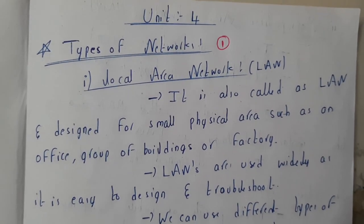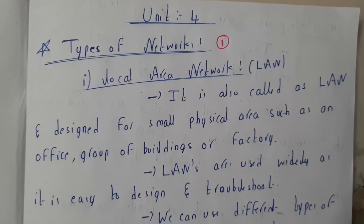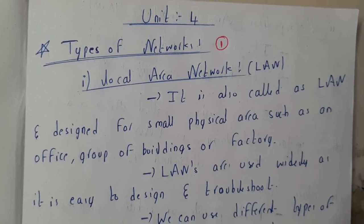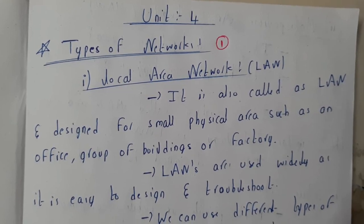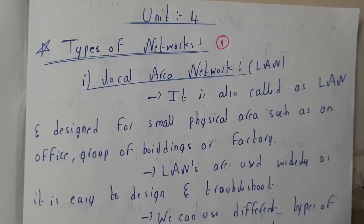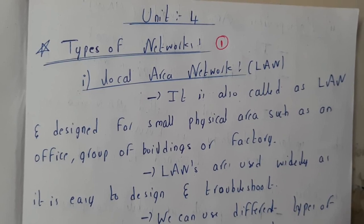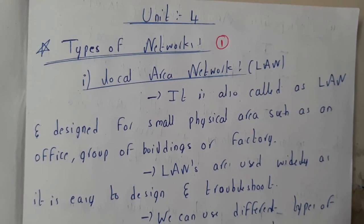Hello guys, we are back with our next tutorial. In this set of series we are going to start the fourth unit of data communication. This chapter consists basically of networking — different types of networks, different topologies, data link layer issues, problems, how messages are passed, switching, different types of Ethernet, and so on. There are almost 20 tutorials in this series.